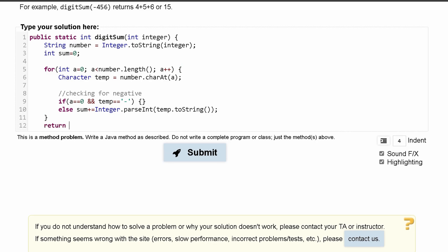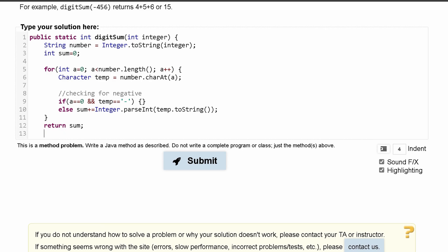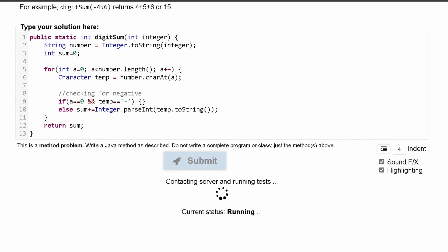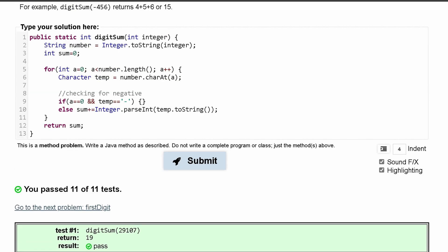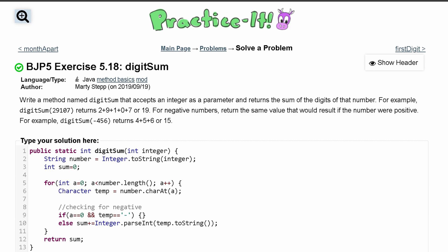And then we just want to lastly return this. So we're going to return the sum, and then we can end this method. So that's going to be our function. If we submit it, we pass 11 out of 11 tests. And that's how we solve practice exercise 5.18, which is our digit sum.